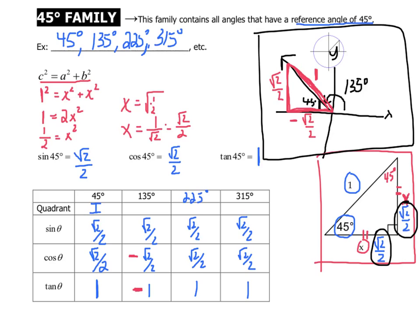Similarly, for 225, both the sine and the cosine are negative, but the tangent is positive. And for 315, the sine is negative and the tangent is negative.